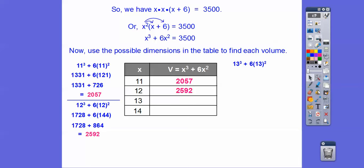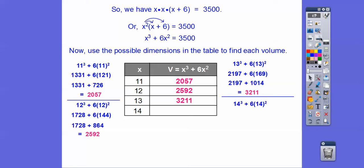13 cubed — do the exponents, 6 times 169, add those together. Getting closer. Let's see what 14 does. Multiply the exponents out, then multiply 6 times 196, add those together.